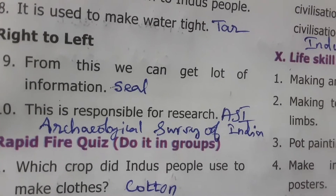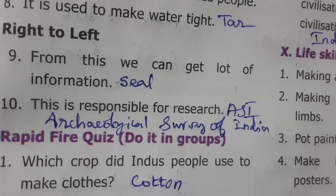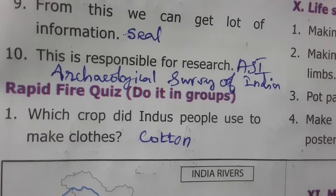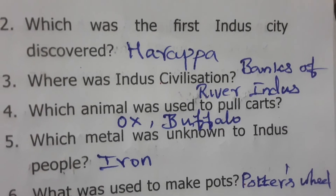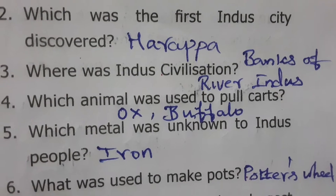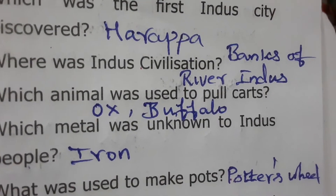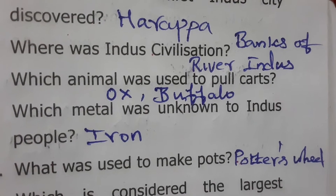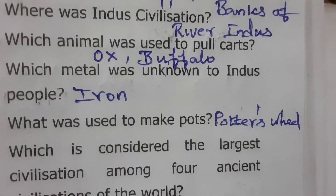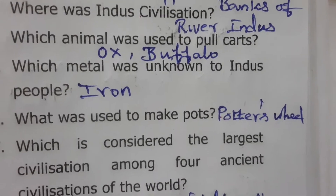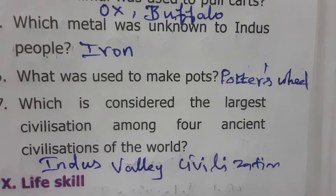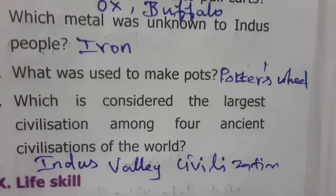Rapid fire questions: Which crop did Indus people use to make clothes? Cotton. Which was the first Indus city discovered? Harappa. Where was the Indus civilization located? On the banks of the River Indus. Which animal was used to pull carts? Oxen and buffalo. Which metal was unknown to Indus people? Iron. What was used to make pots? Potter's wheel. Which is considered the largest civilization among the four ancient civilizations in the world? Indus Valley Civilization.